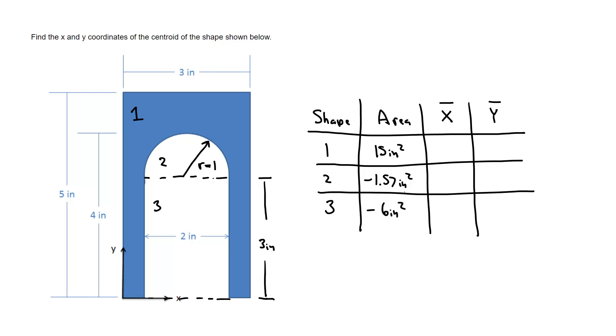Next up we need to know the coordinates of the centroid of each of those pieces. For a rectangle, x bar and y bar is the center of the rectangle. It's going to be 1.5 inches, half the width, and half the height. 1.5 inches is one half of 3, and 2.5 inches is one half of the 5 inch total height.